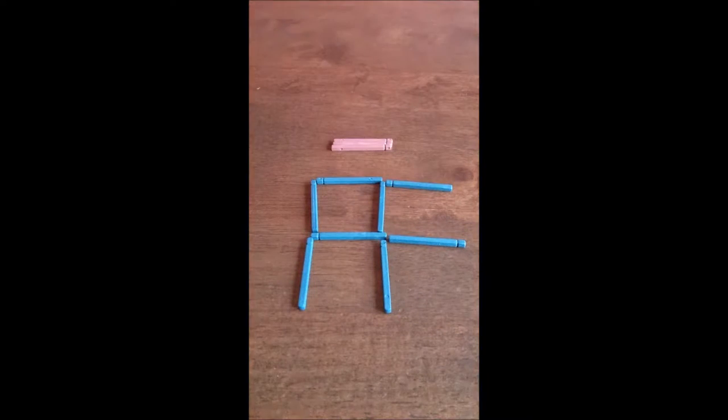So the rule is turn the fish around by moving only three matchsticks, no overlapping. So I'll give you a while so you can figure it out.